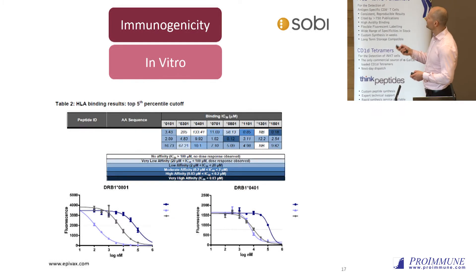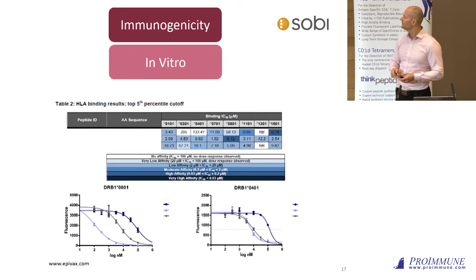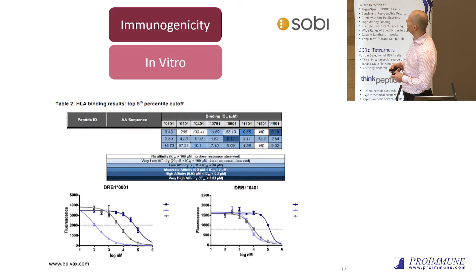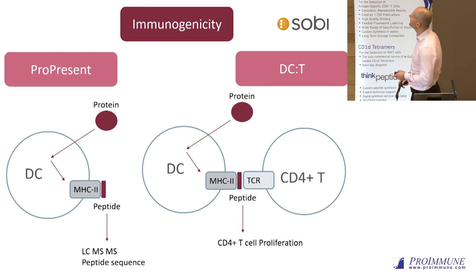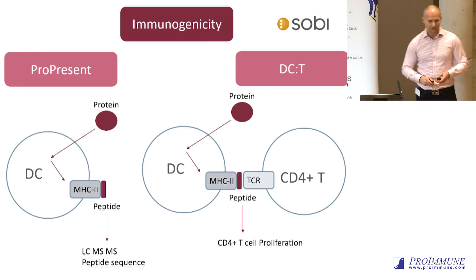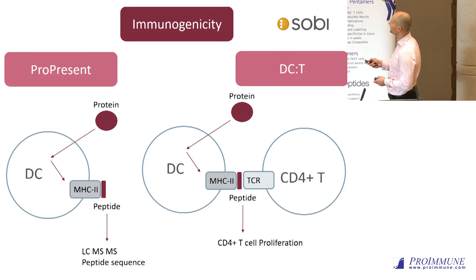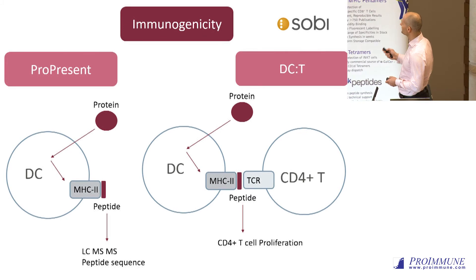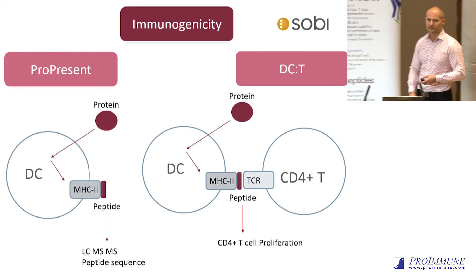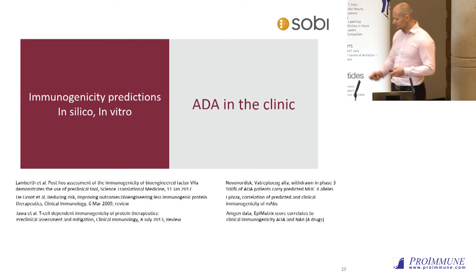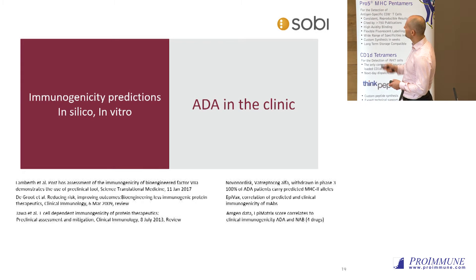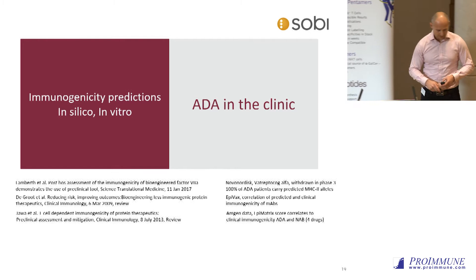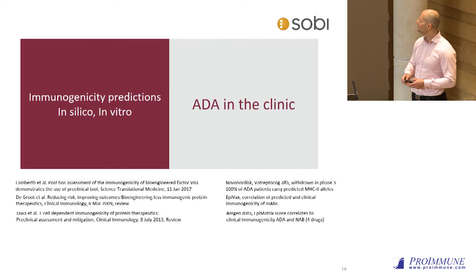Then in vitro, this is a more traditional peptide competition assay looking at affinity — you test all your predicted peptides for binding to different HLAs and get affinity scores. Then we have the ProPresent assays: looking at peptides on the cell surface by LC-MS/MS, and DCT assays looking at protein processing and CD4 T-cell proliferation. There is also a Novo Nordisk study showing some connection between predictions and what happens in the clinic, and other publications from other companies.